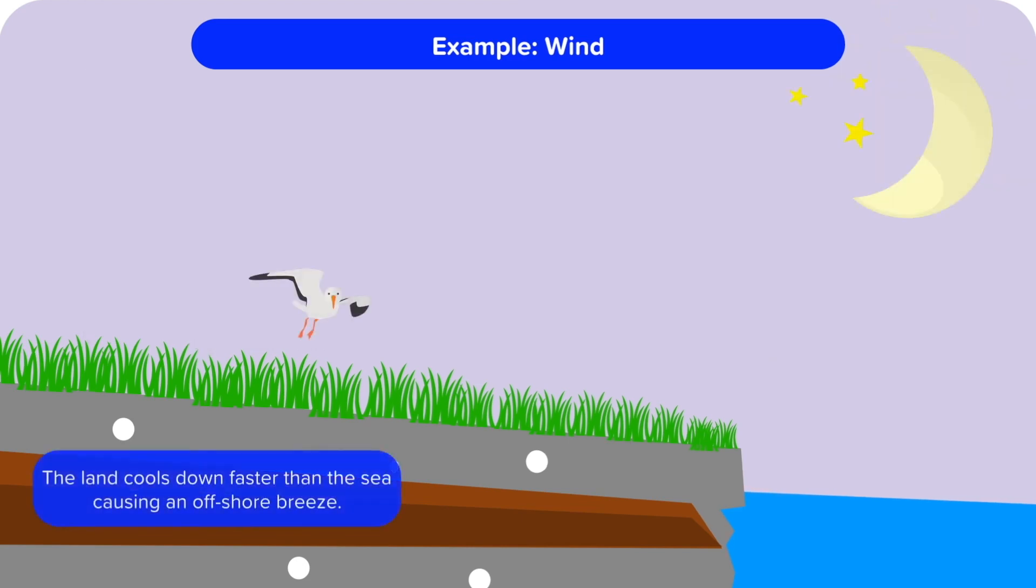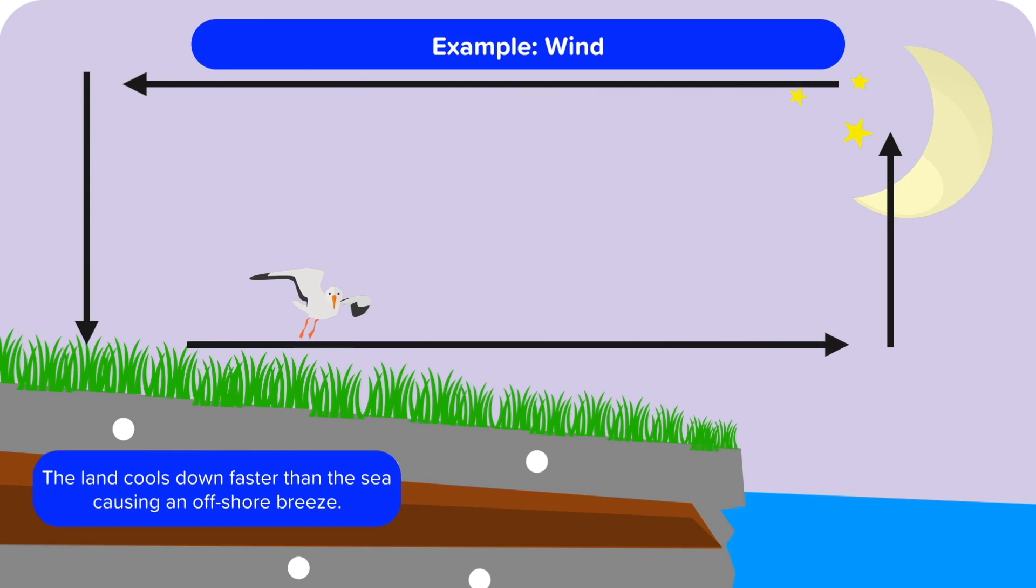At night, the land cools down much more quickly than the sea, so the sea is warmer than the land and the sea heats the air above it. It becomes less dense and rises and the cooler, denser air is sucked around in a convection current out to sea, which causes an offshore breeze.